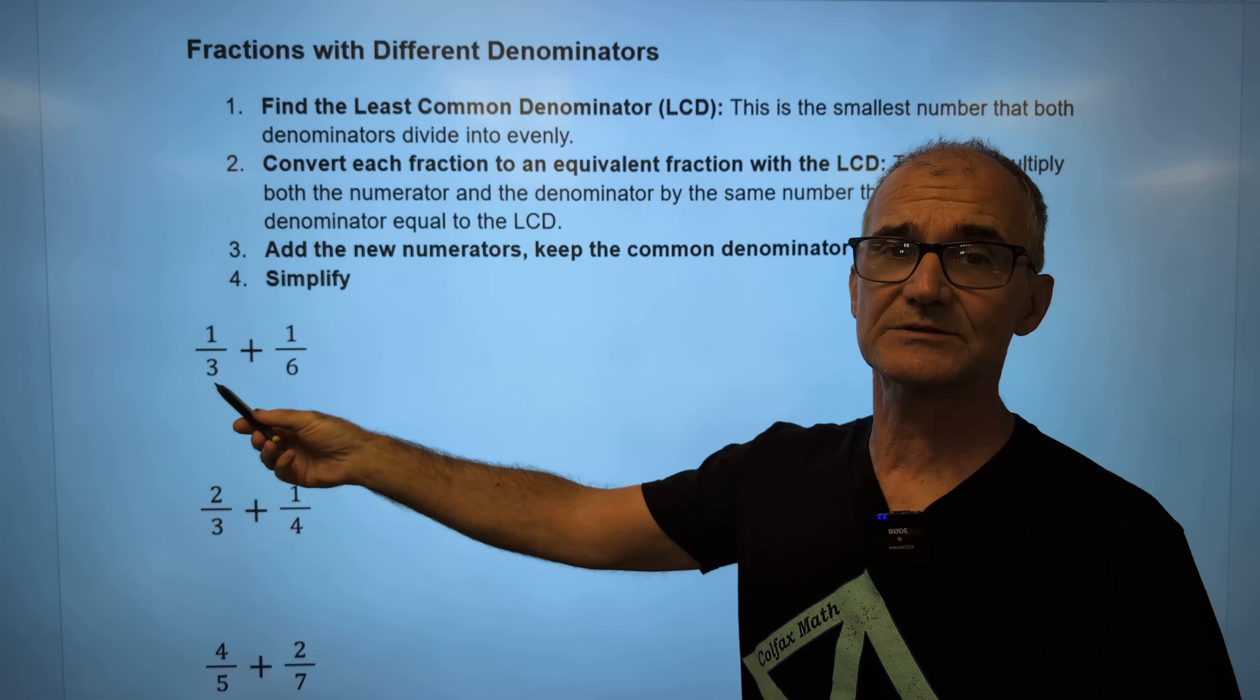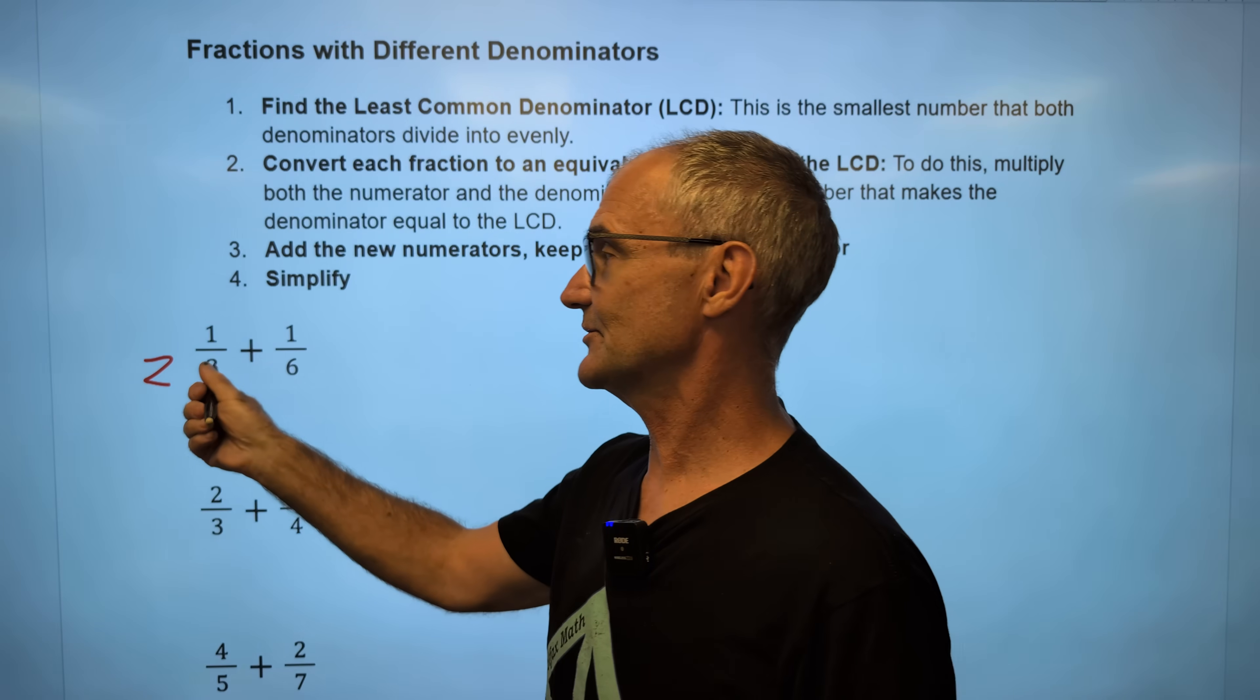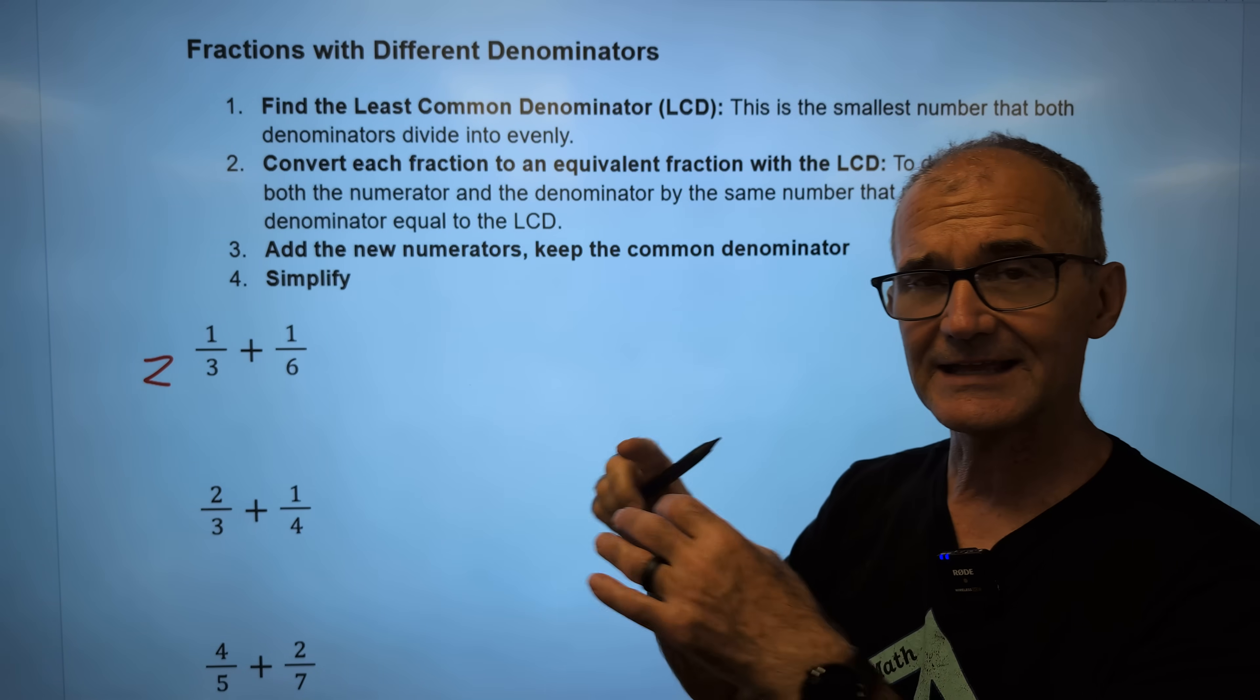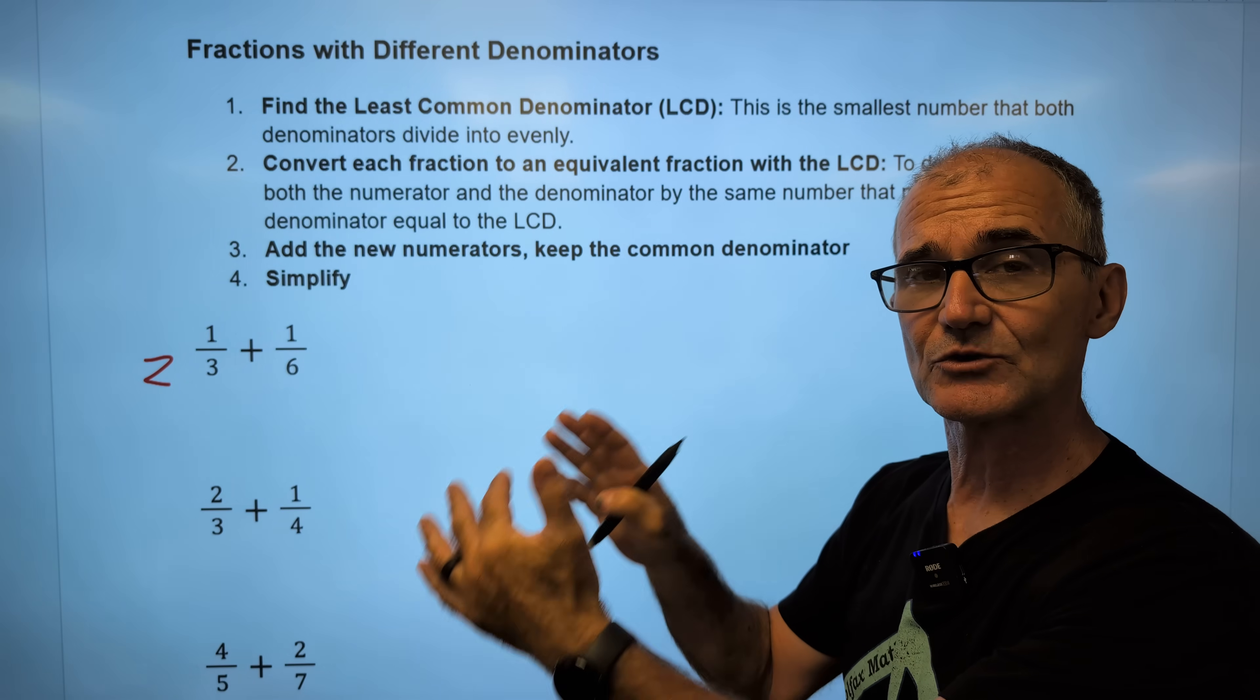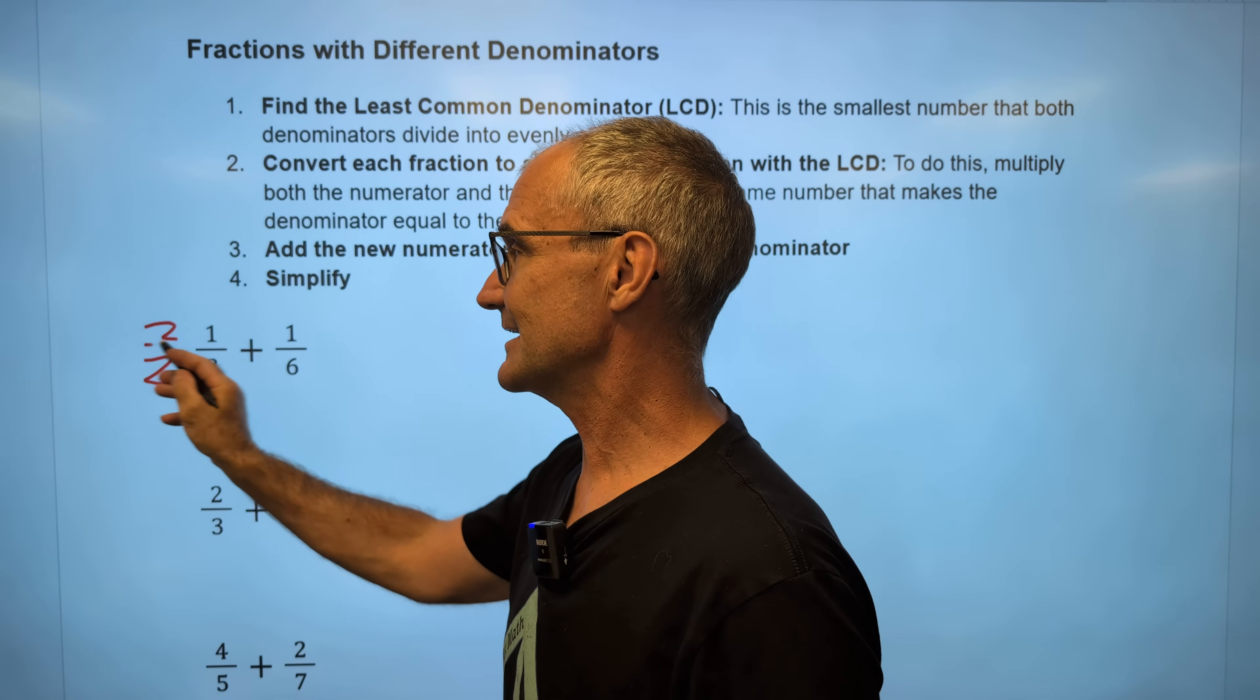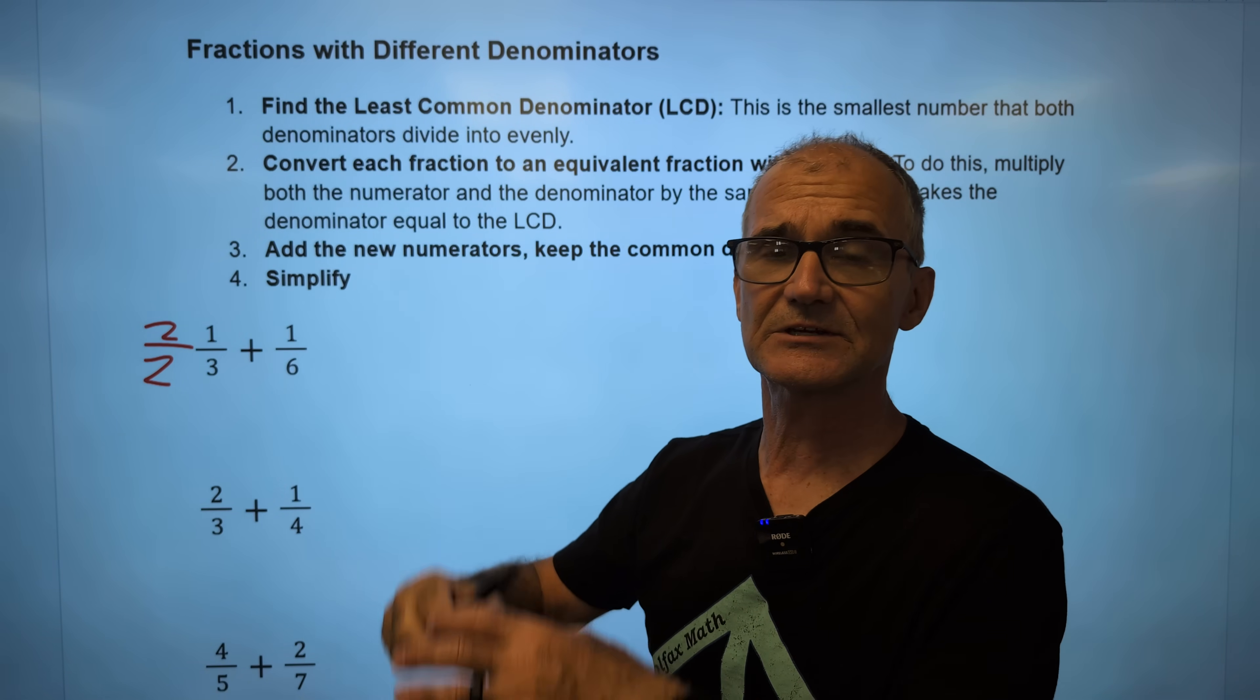I can't just multiply something by two without affecting the value. I have to have an equivalent. So the way I do that is I multiply by a factor of one. Two over two is the equivalent of one.